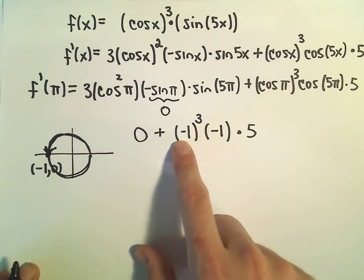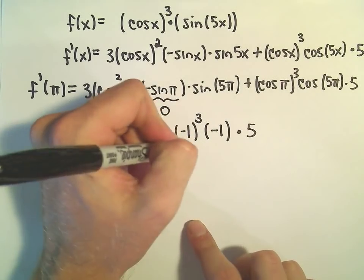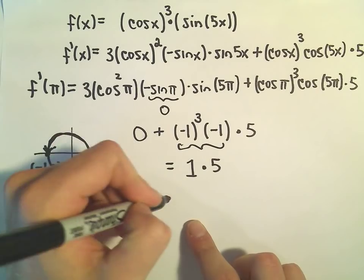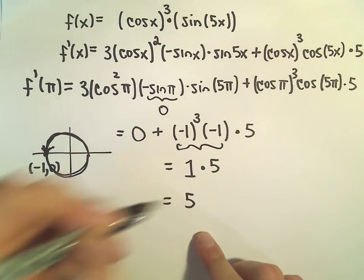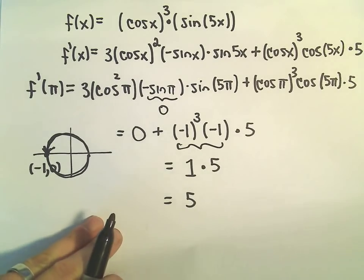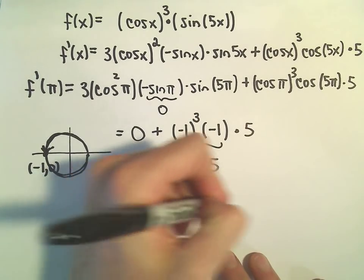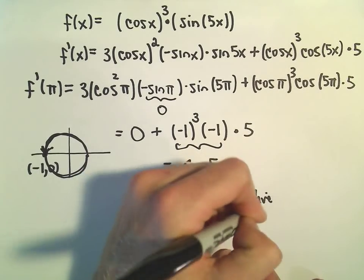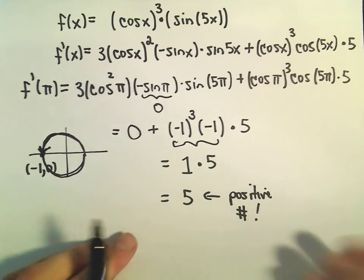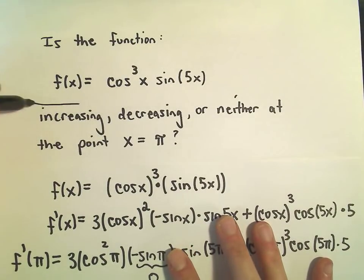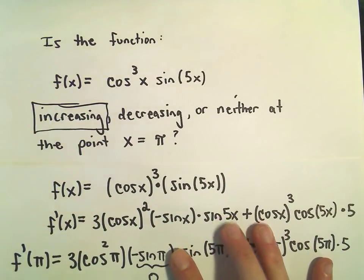Well, negative 1 cubed is negative 1 times negative 1. That's just going to be positive 1 times 5, and we get 5. And since the derivative is positive, again, that's the important thing. It doesn't really matter what number it is, other than it's a positive number. So since it's a positive number, we would just go back and say that the original function is increasing at that point.